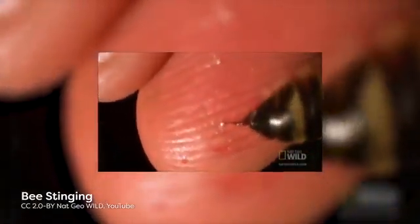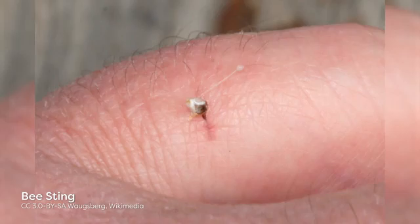Unfortunately for the bees, hive defense comes at a price. When bees sting, the barbed stingers become lodged within the target. When the bee pulls away, the stinger is torn from the bee's abdomen and, with it, major internal organs. This abdominal trauma kills the bee.